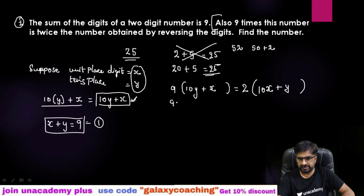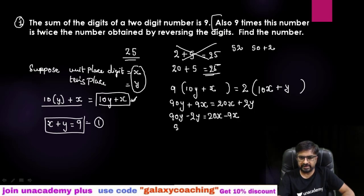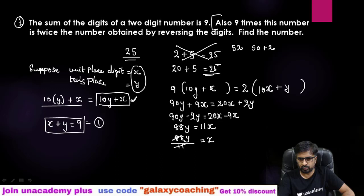Now open this. 9 times 10y is 90y plus 9x equals to 2 times 10x is 20x plus 2y. Take this y on this side, 90y minus 2y equals to 20x minus 9x. So here you will get 88y equals 11x. If you want to find out x, take this 11 in the denominator. So what you will get? x equals 88y divided by 11, which is 8y. So here you got x equals 8y.